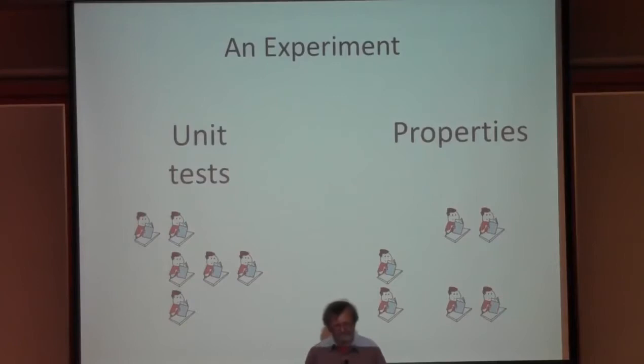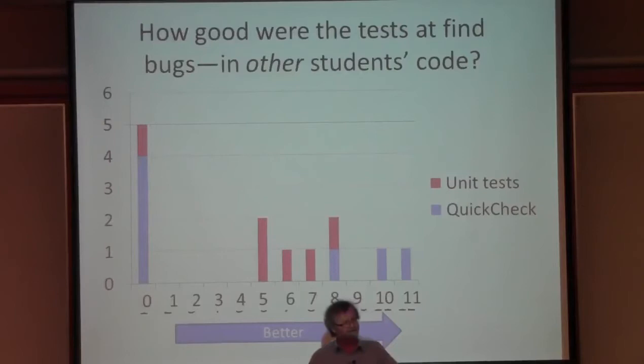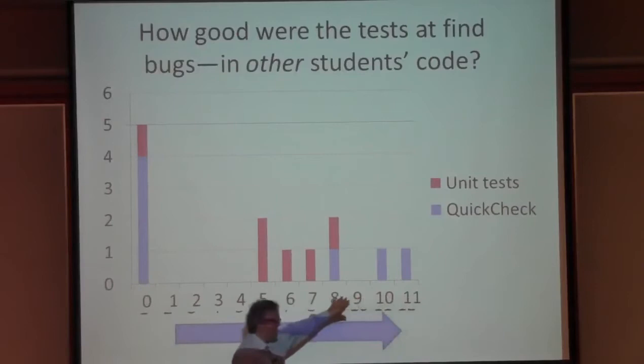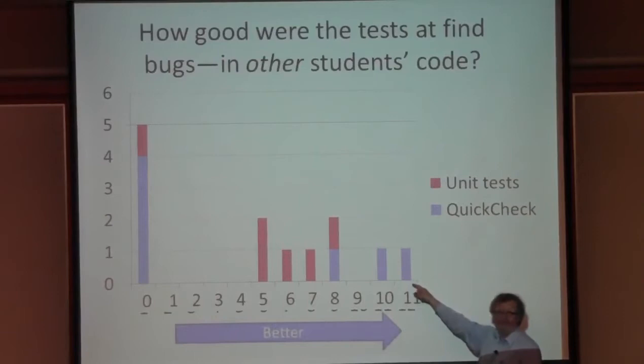One of the problems we gave them had an API of four or five functions, very well specified in the problem description, so that we were able to take one student's test suite and use it to test another student's code. That let us evaluate how good the test suites were developed in the two different styles. The results surprised us. Here you see the quality of the test suite in terms of how many of the other student solutions it could reject - demonstrate there were bugs in. This test suite could find bugs in all 11 of the buggy student solutions.